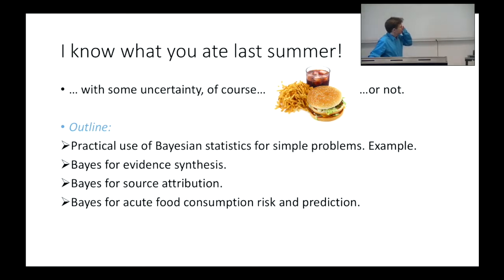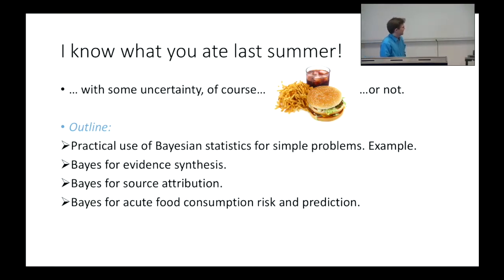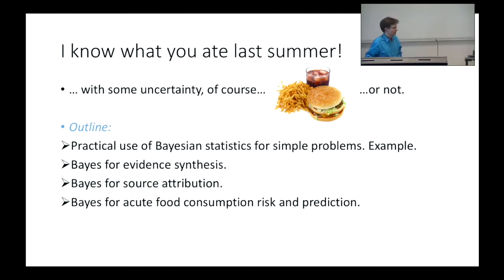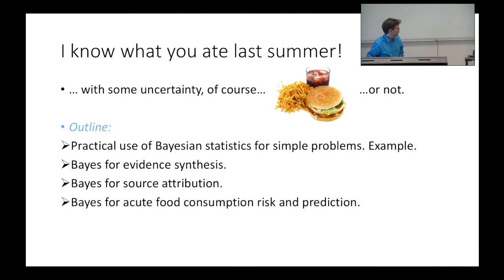So, introduction. The food safety risk — you have to know something about what you eat and what's in it. We study whole populations and the population risks, and of course we need to have some data about the population behaviour, what's in the food, how it was made, et cetera. I have four different examples from different areas: one very simple example with small data sets, and then three bigger problem areas — evidence synthesis, Bayesian source attribution, and Bayesian methods for acute food consumption risks and predictions.